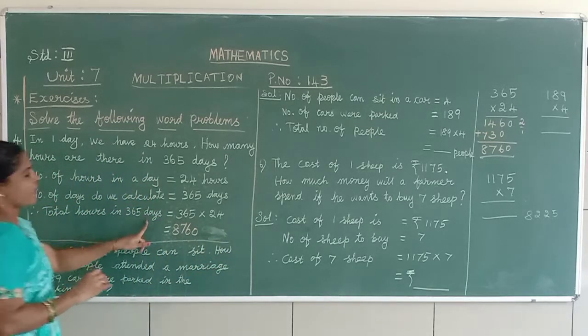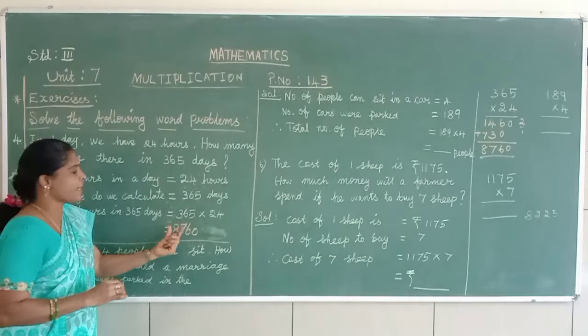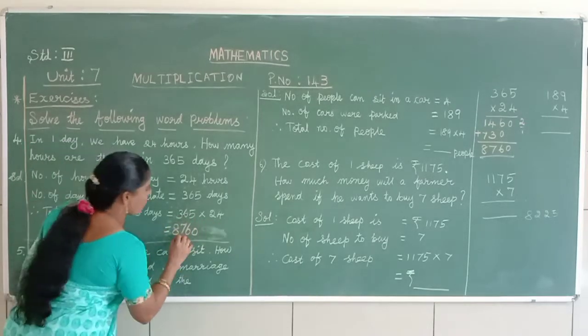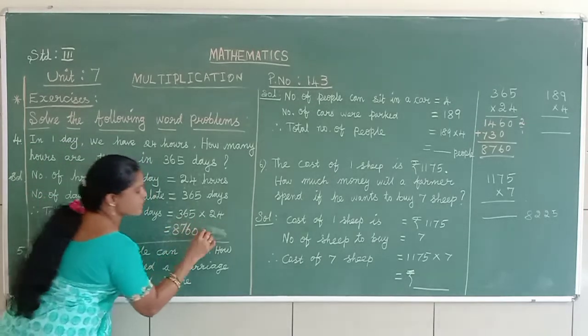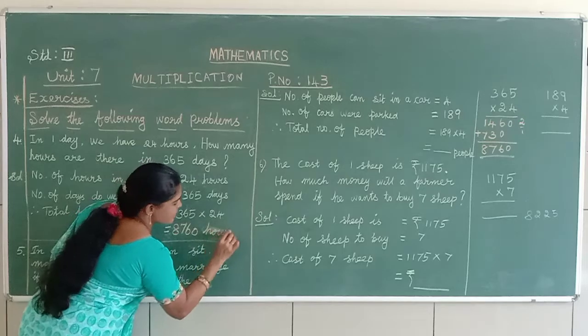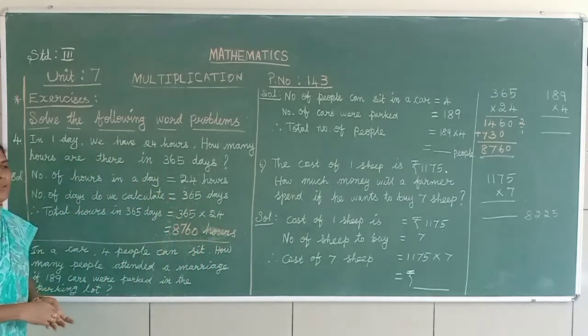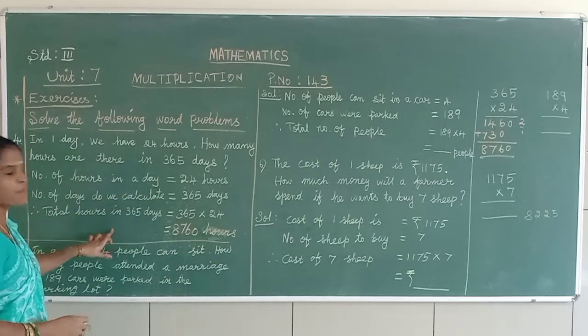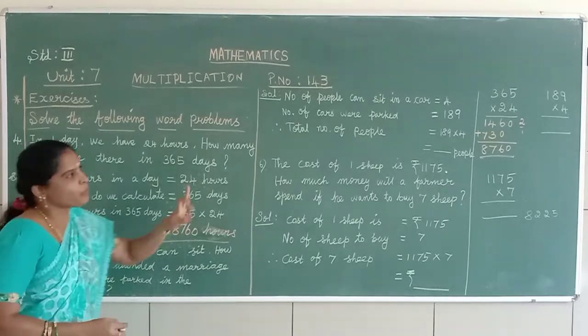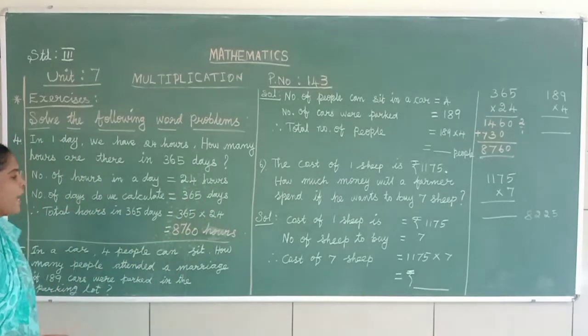Total hours in 365 days. 365 into 24. 8,760 hours. Understand? You should write the steps very neatly and do the multiplication and find out the answer.